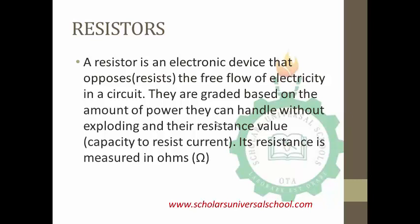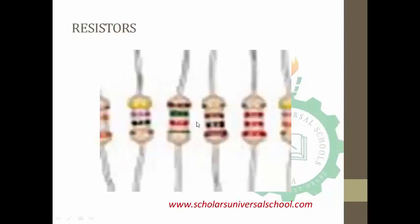The function of a resistor is to go against the flow of electricity in a circuit — it resists it, it opposes it. Resistors are graded based on the amount of power they can handle without exploding and their resistance value. We have the 100 ohms resistor and the 1k ohms resistor. The resistance of a resistor is measured in ohms. Shown here are pictures of resistors with different colors, different power, and different resistances.